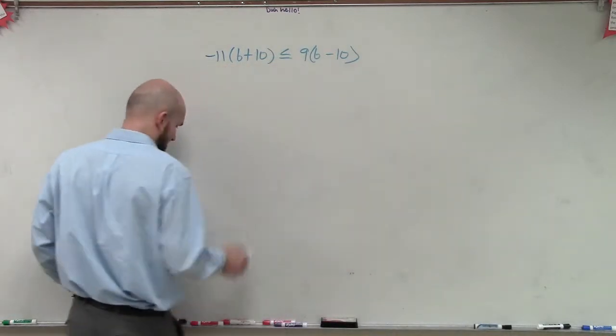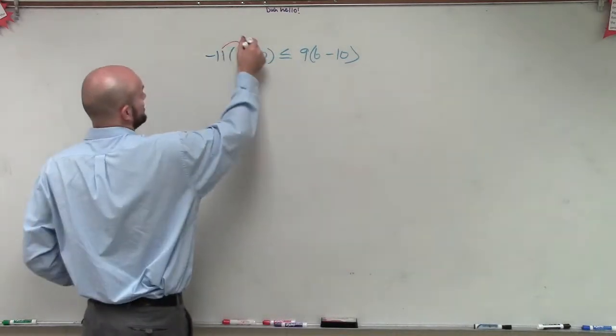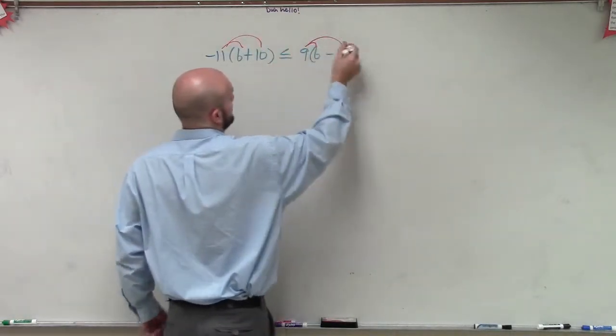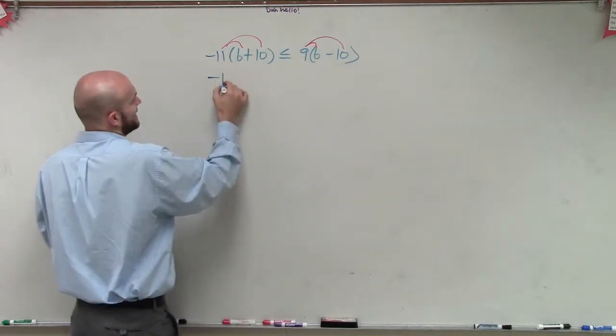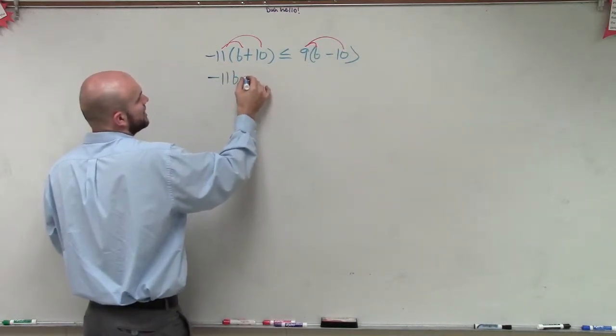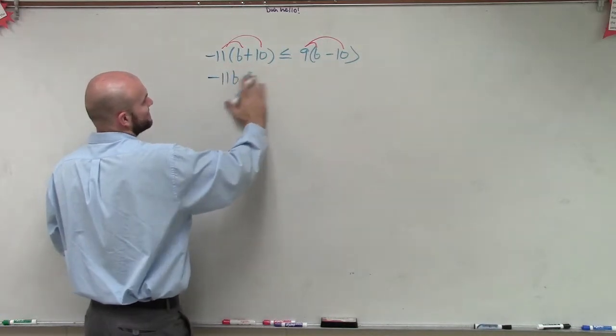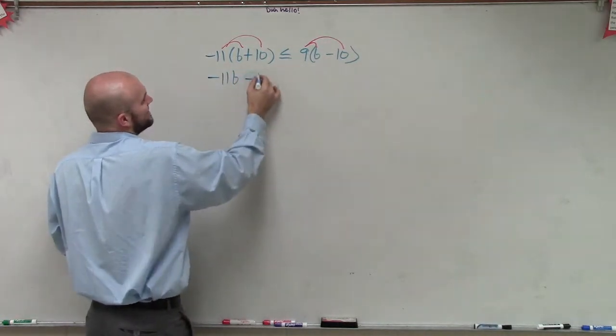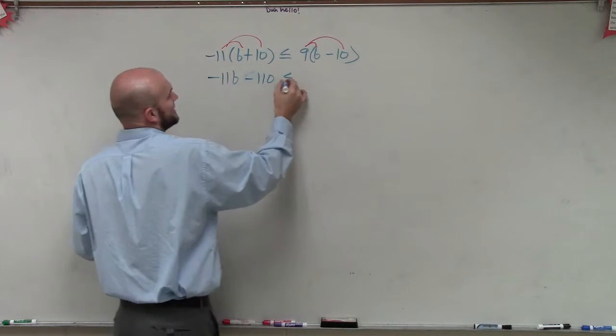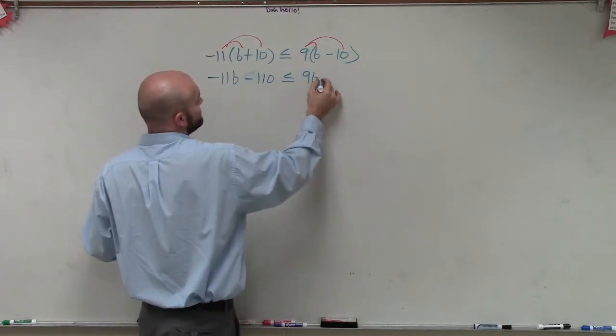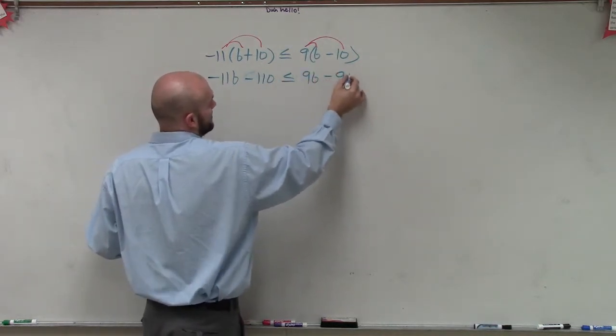So the first thing I need to make sure I do is apply distributive property. So therefore, I'm going to have negative 11b plus negative 110 is less than or equal to 9b minus 90.